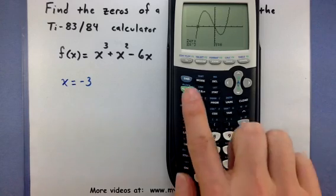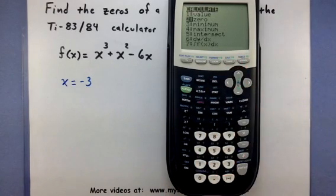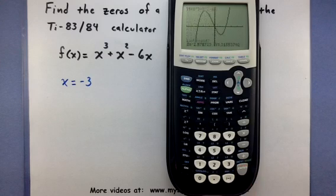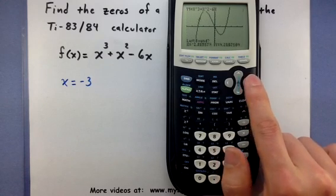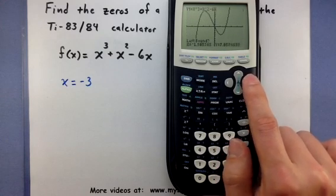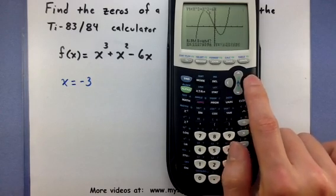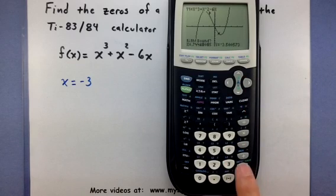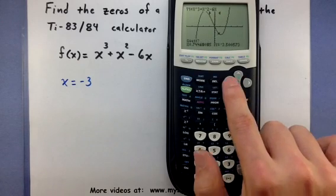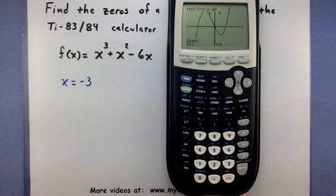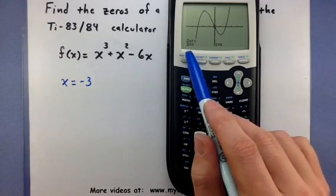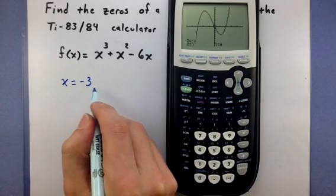Let's quickly go through those. So, second, calc, select my zero option, enter. Move my cursor to where it is on the left side of the zero I'm looking for. Enter. Okay, that looks pretty close. Enter. Move my cursor to the right side of the zero I'm looking for, enter. And move my cursor to where I think that zero is, enter one more time. And the calculator will display where it thinks the zero is. So it looks like this one is located right at zero.